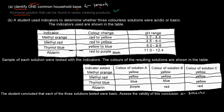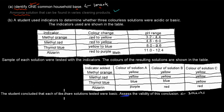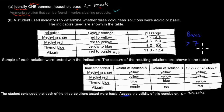For the second part, the question is to assess the validity of this conclusion. 'Assess' means we have to see if it's right or wrong. The student concluded that each of the three solutions — A, B, and C — were all bases. Remember, bases are anything with a pH above 7, so most of these should have pHs of 8 or higher.